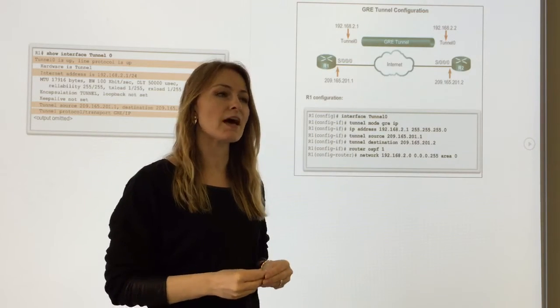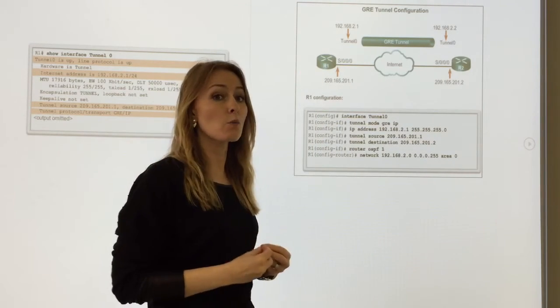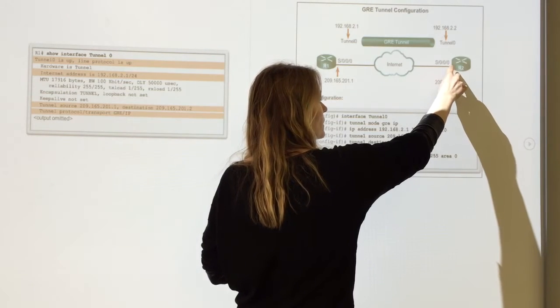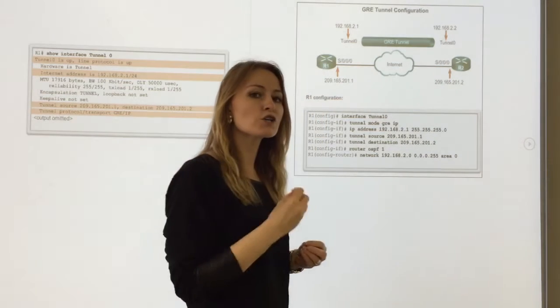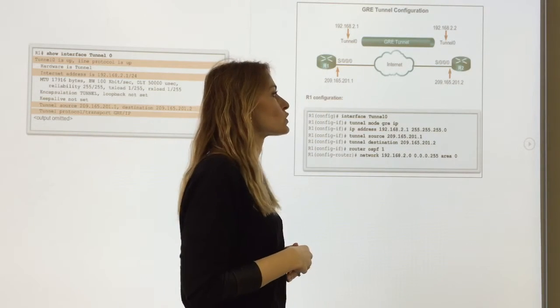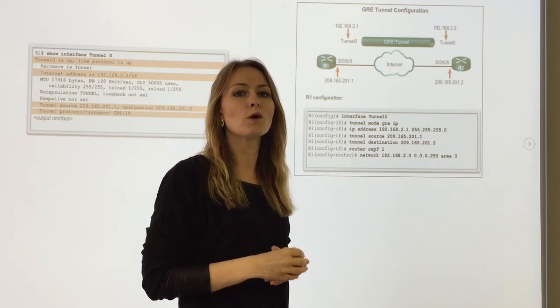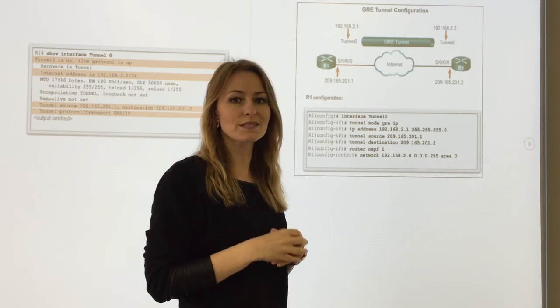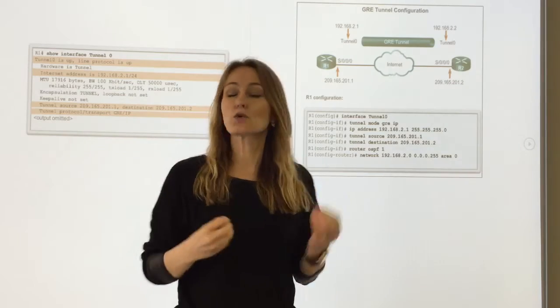The tunnel destination from R1's perspective is R2's interface, 209.165.201.2. So really, when you do show interface tunnel, the IP addresses for tunnel source and tunnel destination...